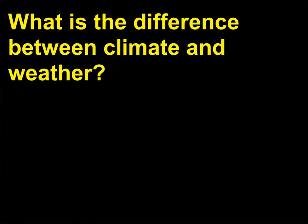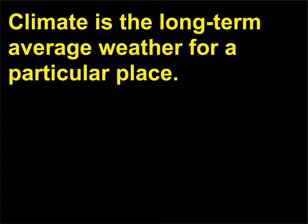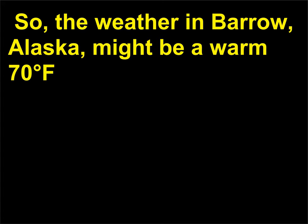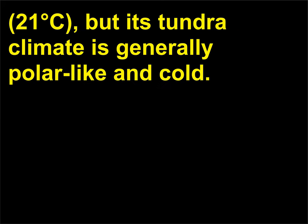What is the difference between climate and weather? Climate is the long-term average weather for a particular place, while weather is the current condition of the atmosphere. So the weather in Barrow, Alaska, might be a warm 70 degrees Fahrenheit (21 degrees Celsius), but its tundra climate is generally polar-like and cold.